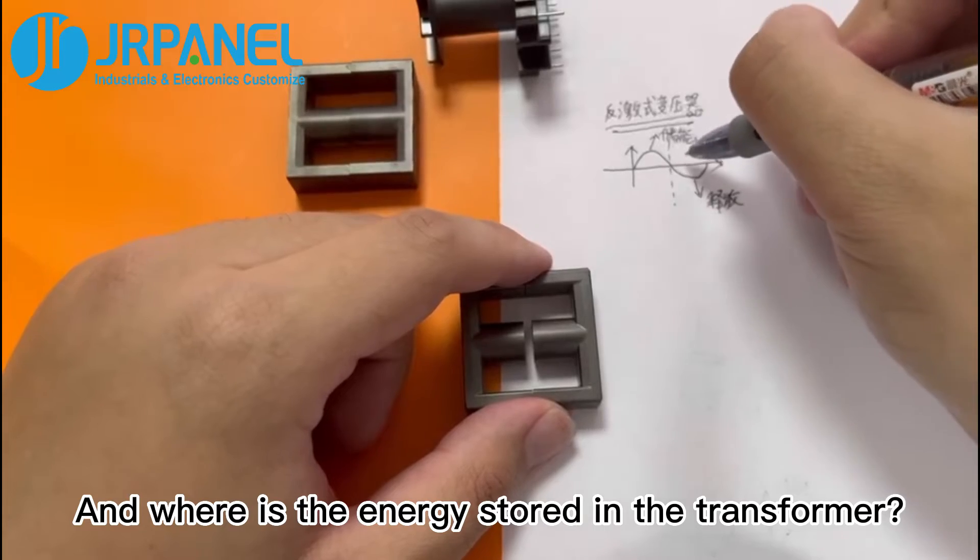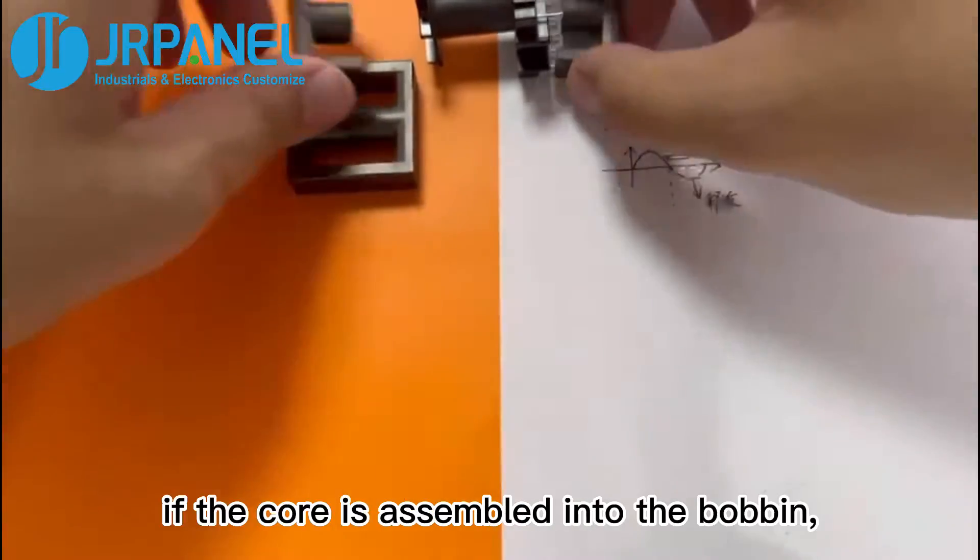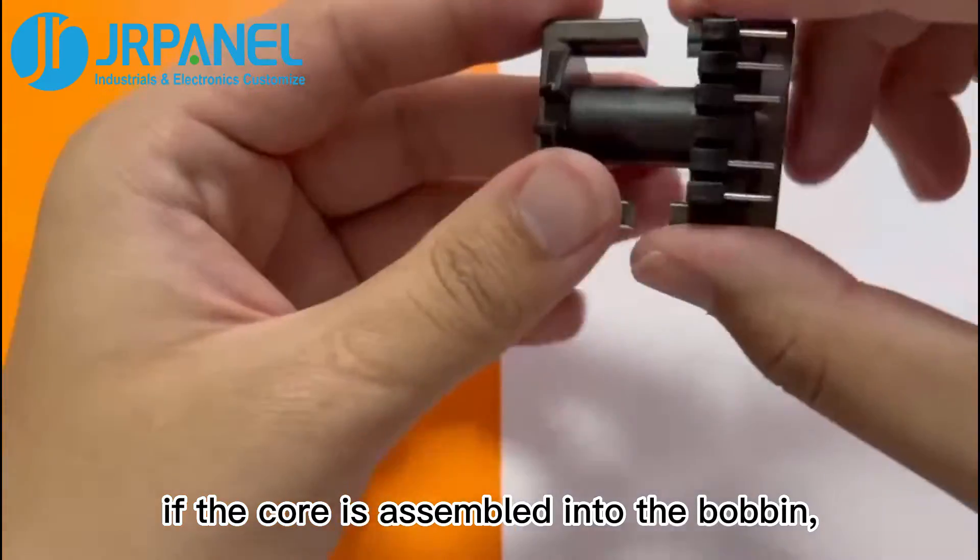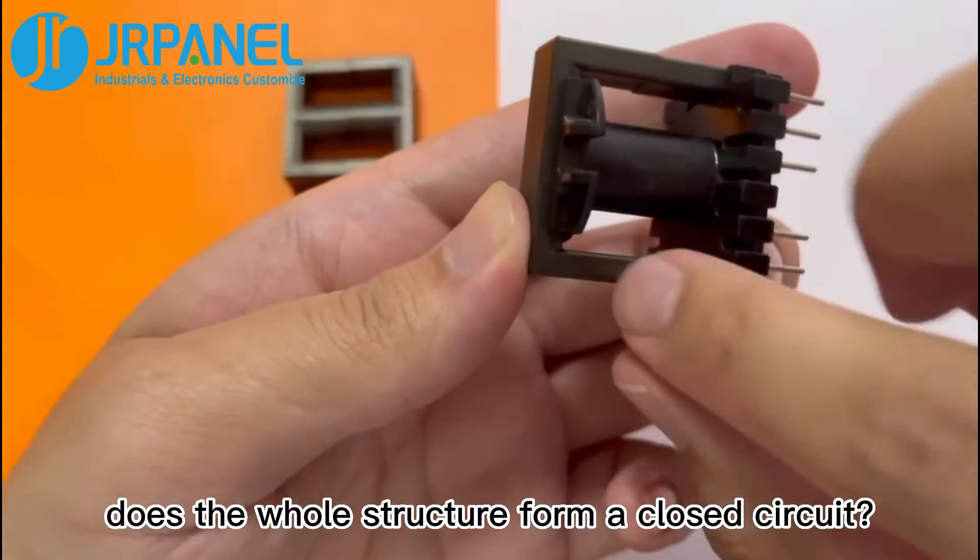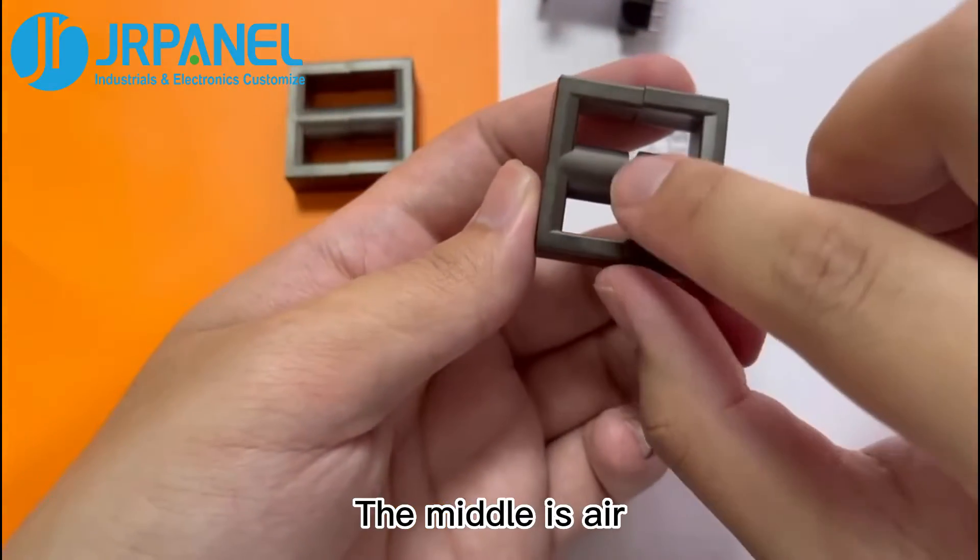And where is the energy stored in the transformer? It is stored in the air gap. In the transformer, if the core is assembled into the bobbin, does the whole structure form a closed circuit? Then the magnetic reluctance of these two sides is very small. The middle is air.